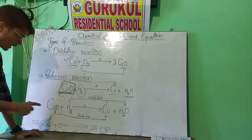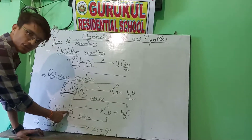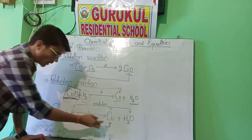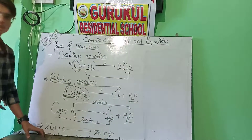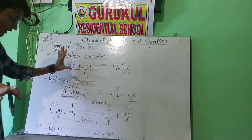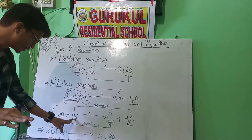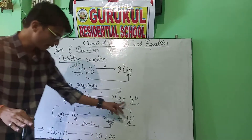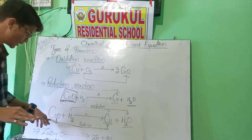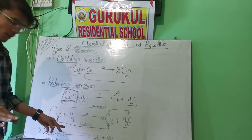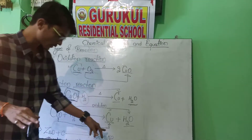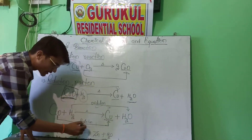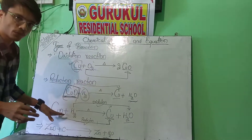Let's take the same example. When copper oxide reacts with hydrogen, it forms copper plus H₂O. From the definition of oxidation — combining with oxygen — we see that hydrogen is combining with oxygen, so this is an example of oxidation. And from copper oxide, oxygen is removing and it's forming copper, so this is an example of reduction. In one reaction, oxidation and reduction are both happening together, so this is an example of a redox reaction.